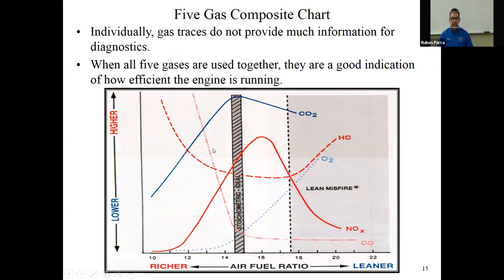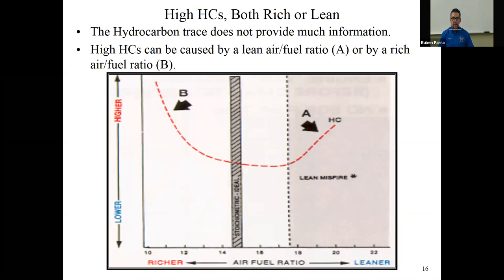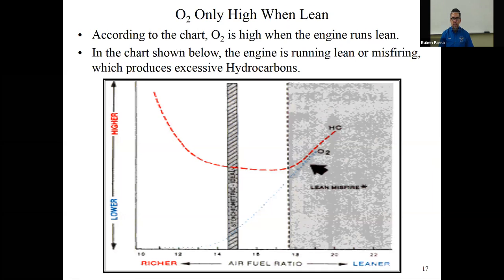Here are our five gases combined. Look at this chart and study it — it's in your book. It's the trace of carbon monoxide, hydrocarbons, oxides of nitrogen, oxygen, and carbon dioxide, and how they react. You need to remember what happens with these gases as we go from richer to leaner. Hydrocarbons will be high both rich or lean — how do we find out which? We look at the oxygen.